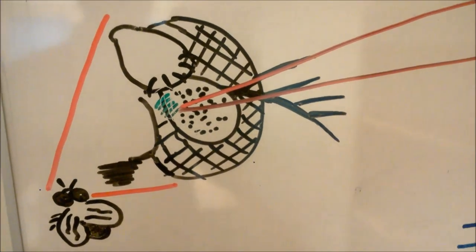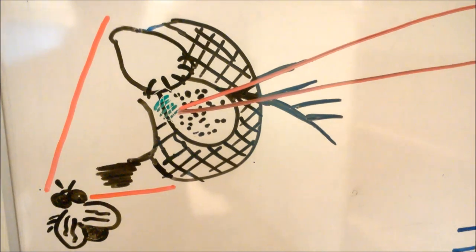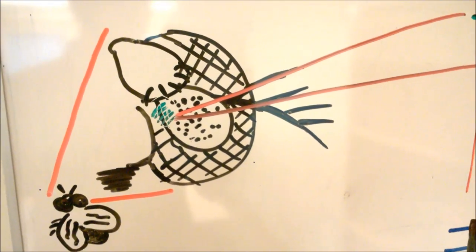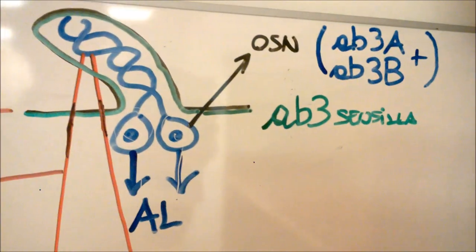On the insect antenna, there are thousands of different types of sensilla. Sensilla are specific sensory units provided with a proper set of olfactory sensory neurons, generally called OSNs.